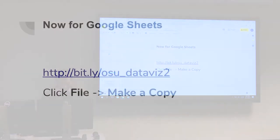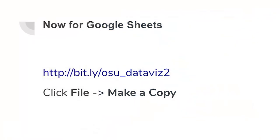For our next section, go to this link — same one with a '2' added — which will take you to a Google spreadsheet. Once you're there, go to File and click Make a Copy, because otherwise with 20 people working on the same spreadsheet we'd have chaos. You'll need to sign in to your Google account. Almost every OSU student has one, so you can log in using your OSU email. Once logged in, click File and Make a Copy.